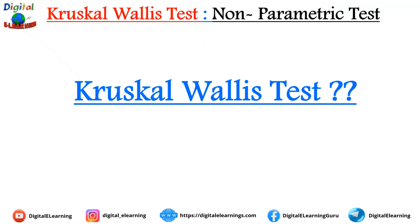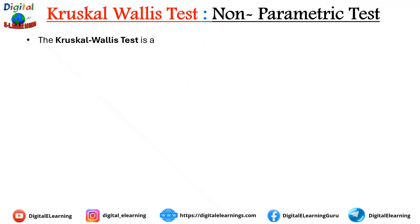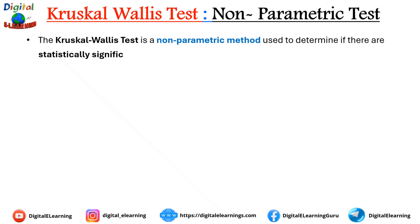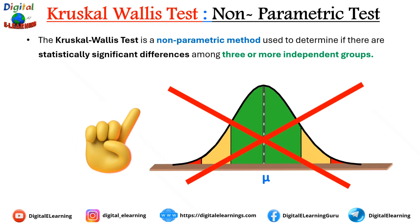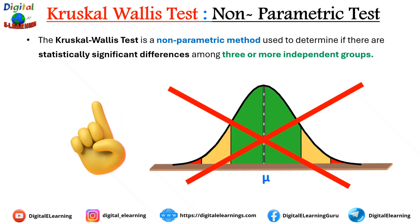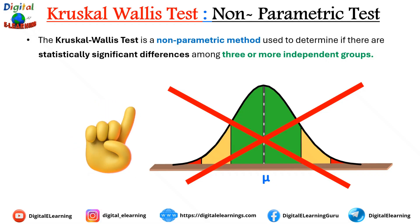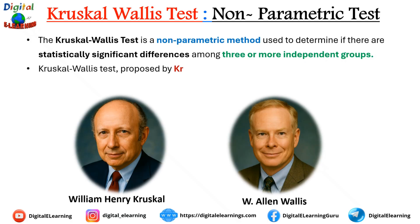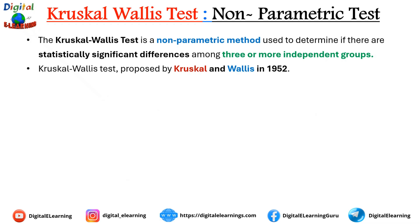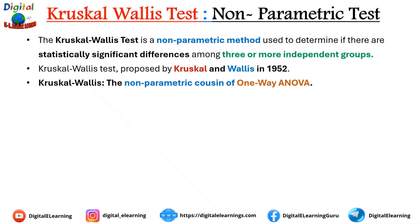The Kruskal-Wallis test is a non-parametric method used to determine if there are significant differences among three or more independent groups. Because it is non-parametric, it does not need to be normally distributed — all you need is your data to be at least ordinal. It was proposed by William Henry Kruskal and Alan Wallis in 1952. Think of it as a non-parametric cousin of one-way ANOVA, and an extension of the Mann-Whitney U test, which just compares two groups.